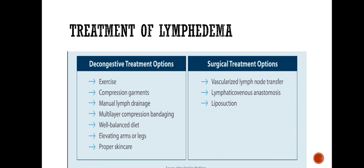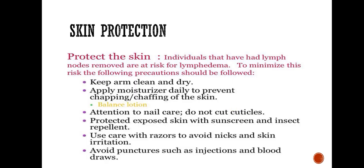Surgical treatment options are: vascularized lymphatic node transfer, lymphatic-venous anastomosis — where the flow of lymphatic fluid is redirected — and liposuction to remove accumulated fluid. Skin protection is essential because skin infection commonly occurs in this condition. Those who have had lymph nodes removed are at risk for lymphedema, so to prevent it you must take care of your skin to minimize this risk.